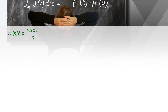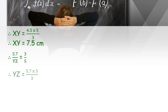So XY equals 4.5 into 5 upon 3. Cancelling 4.5 by 3 gives 1.5, and 1.5 into 5 gives 7.5 centimeters. So XY equals 7.5 centimeters. For YZ: 5.7 upon YZ equals 3 upon 5, so YZ equals 5.7 into 5 upon 3. Cancelling gives 1.9, and 1.9 into 5 gives 9.5 centimeters. So YZ equals 9.5 centimeters.